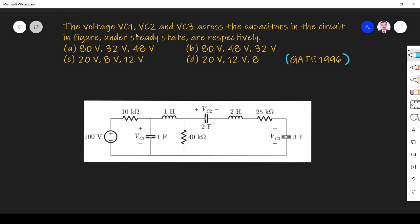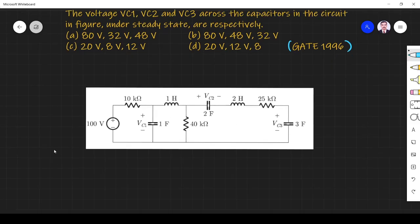The voltage VC1, VC2 and VC3 across the capacitors in the circuit in figure under steady state are respectively. So they asked what is the voltage across VC1, this one VC2, VC3 under steady state.